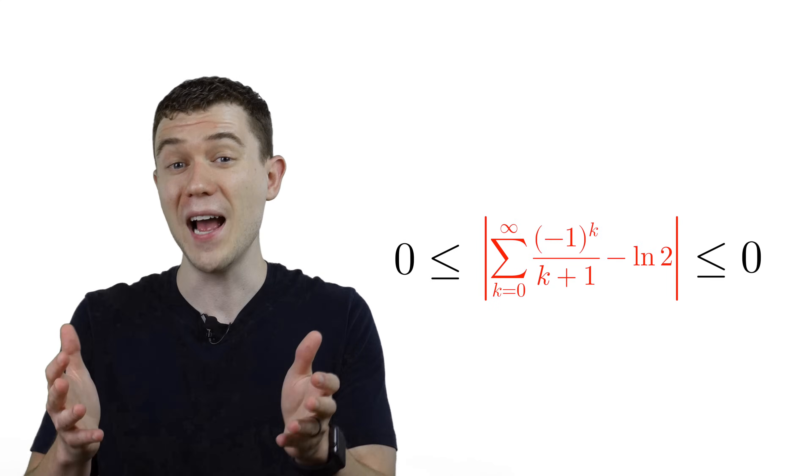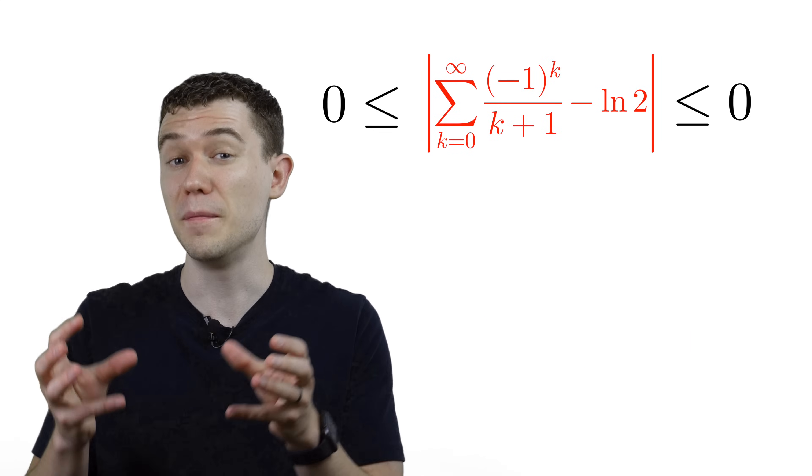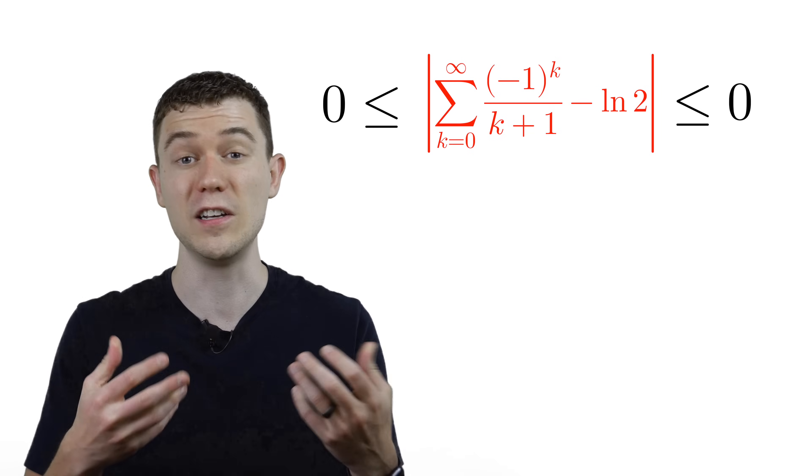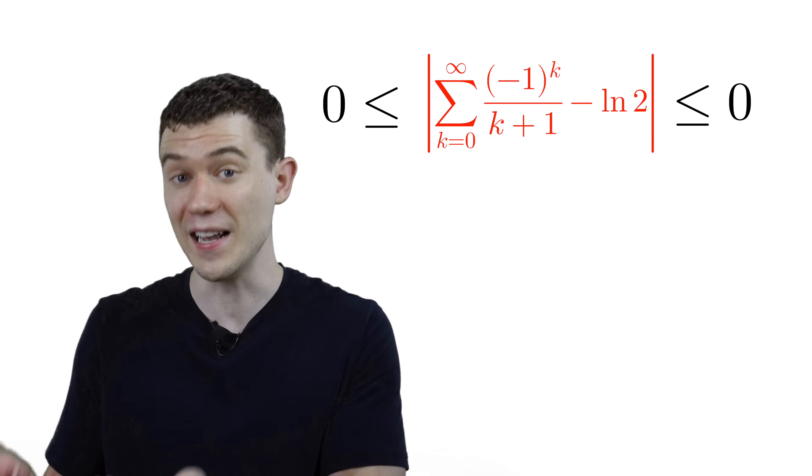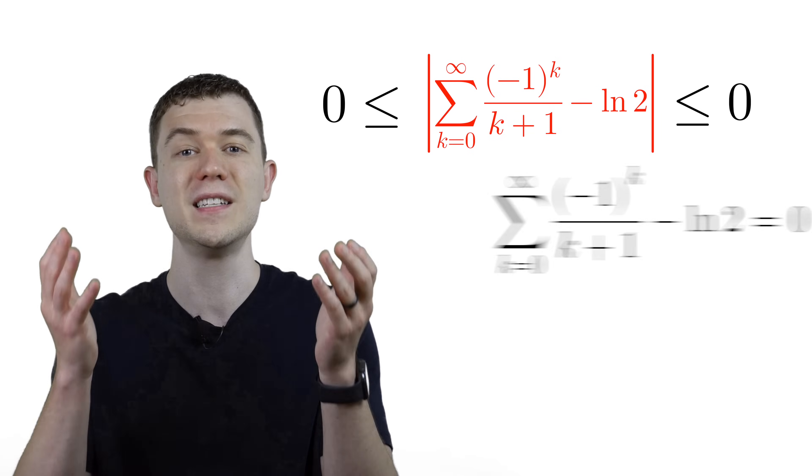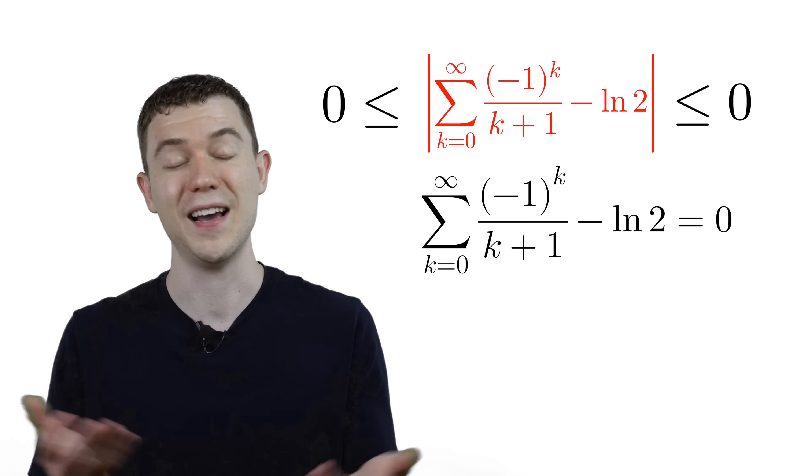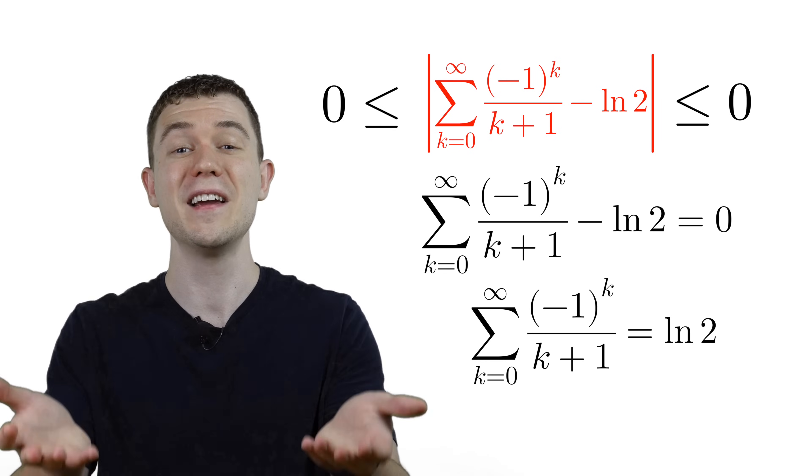And so we have the squeeze theorem. If the middle part is simultaneously greater than or equal to 0 and less than or equal to 0, it must be 0. Add natural log 2 to both sides, and there you have it.